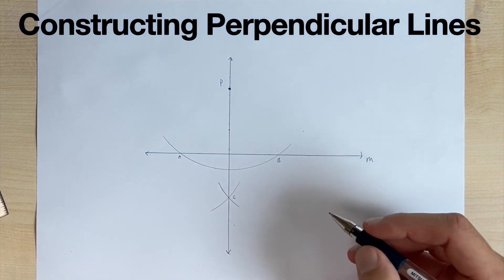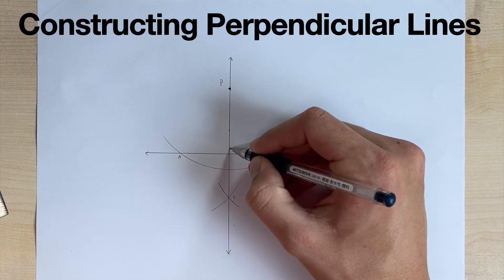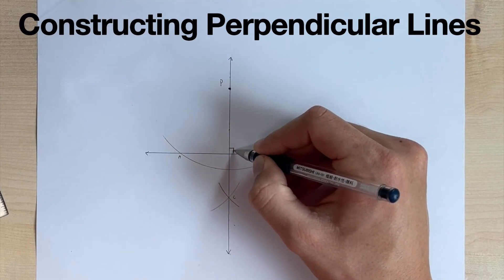Okay. And so now to indicate that this is a perpendicular line, we can draw our 90 degree or our right angle box right there.